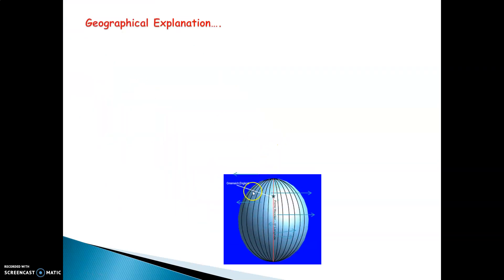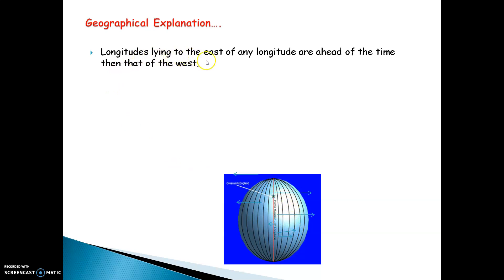You can see the earth having longitudes on it. Longitudes lying to the east of any longitude are ahead in time compared to those to the west. In this picture you can see the prime meridian at the center of the earth. From here there are various longitudes to the east as well as to the west, and the distance from the prime meridian towards each of the longitudes is different.